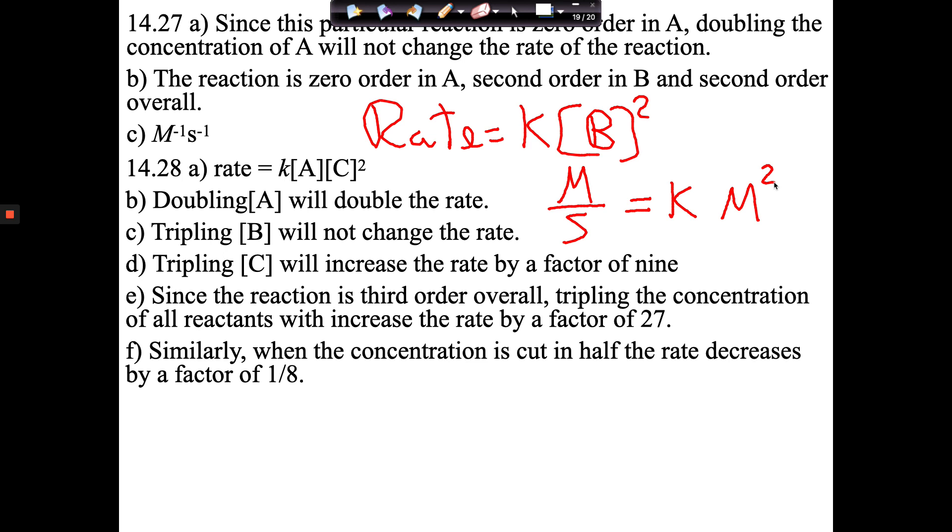So in order to solve this for K, we're going to divide by molarity. So I'll just put it here. And we divide by molarity squared, and we end up with this. But one of these molarities cancels, which means our units for molarity are actually one over molarity, and then seconds.